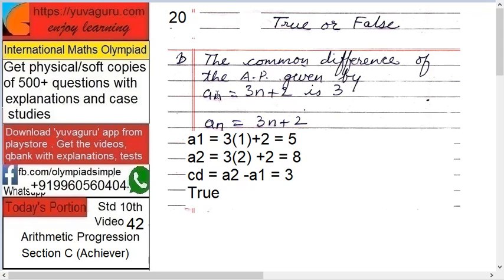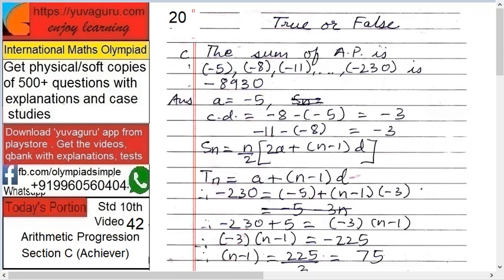See, there is a simpler way. Don't go for AN plus 1 and all that. AN is given by 3N plus 2, so any N will satisfy this condition. A1 equals 3 into 1 plus 2, that is 5. A2 equals 3 into 2 plus 2, that is 8. The common difference is the difference between two consecutive terms — that is 8 minus 5, which is 3.